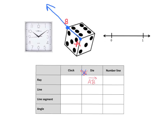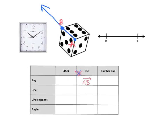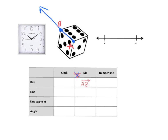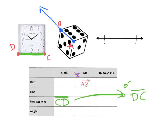Let's do a line segment on the clock. I'll call this point C and this point D. A line segment would look like this — it has a start and an end. That's DC or CD; we can do it either way. So on the clock our line segment is CD with no arrows, or we could have done DC and that would also be fine.